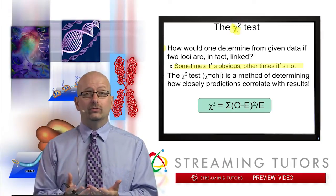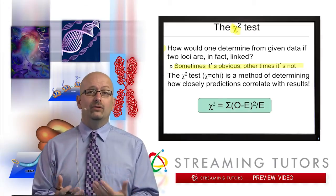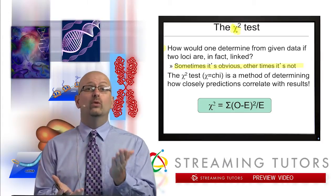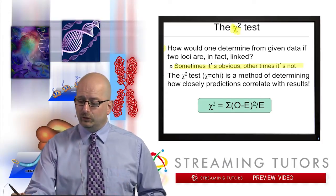Because as we're going to see, if you make a hypothesis that two genes are unlinked, you can say if that's the case, then this is what we should observe. And then you compare that with what you actually do observe.